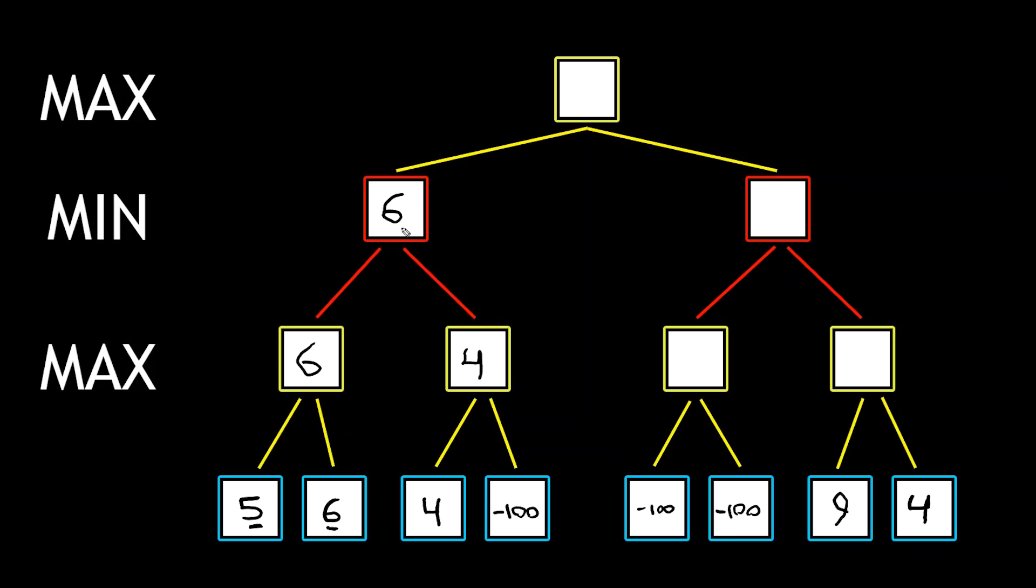However, now the minimizer player sees that, oh, before I had just only six as an option, so now I have four as an option. So I would always pick the path that would give me four as opposed to six because I'm trying to make your life hard.